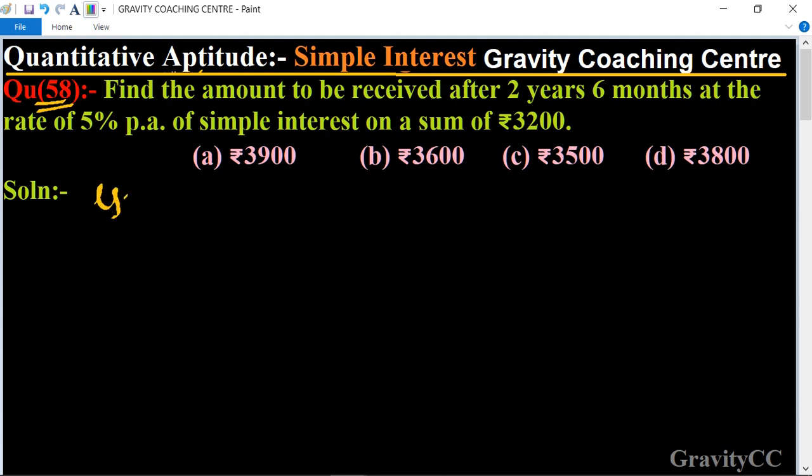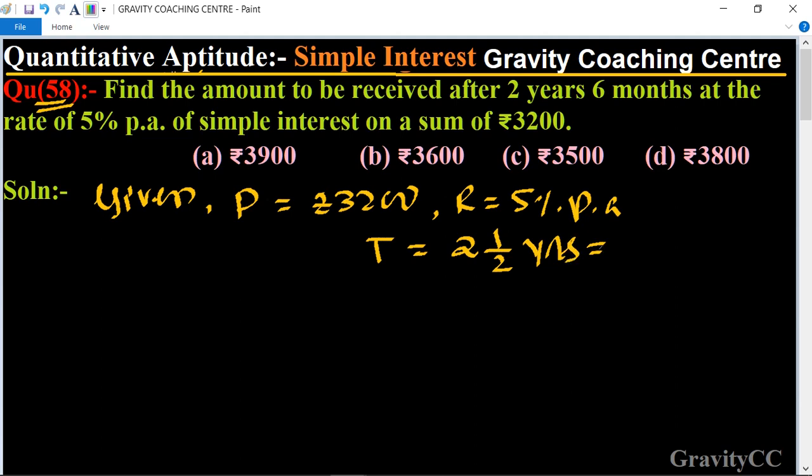Given: Principal P = ₹3200 at the rate of 5% per annum for 2 years and 6 months. 2 years 6 months means 2½ years, so T = 5/2 years. What is the amount after 2½ years?